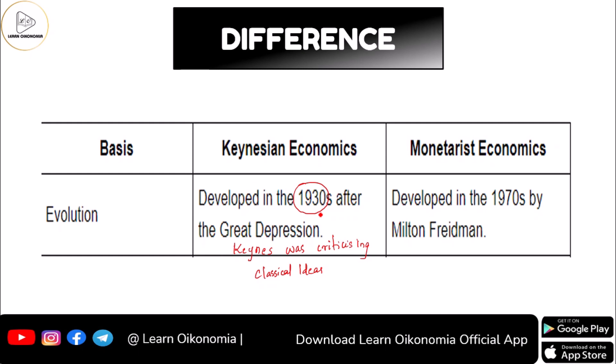It was during that time that Keynes came up with his famous work, the General Theory. The full name of the book is General Theory of Employment, Interest and Income. In this book, he was emphasizing the role of government and putting forward his criticisms regarding the classical school of thought. These ideas later got support from various other economists, and we call this branch of economics Keynesian economics.